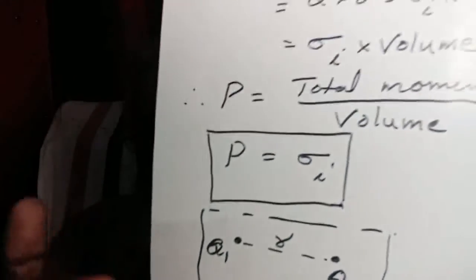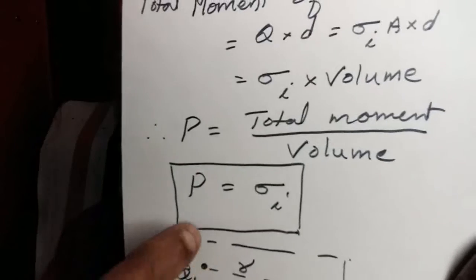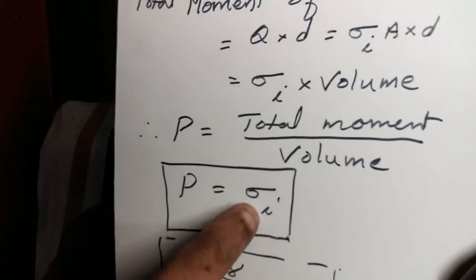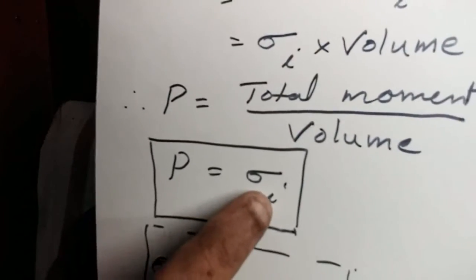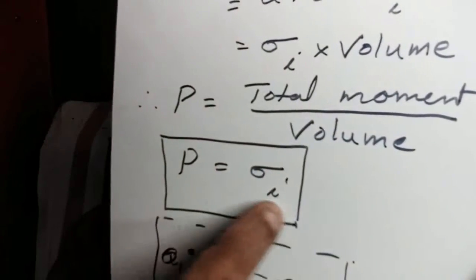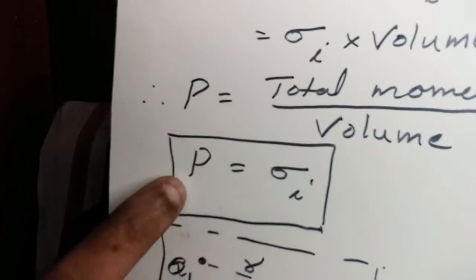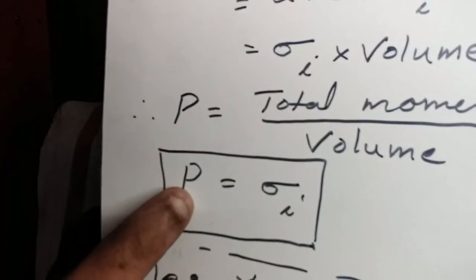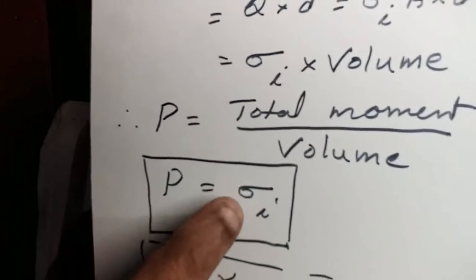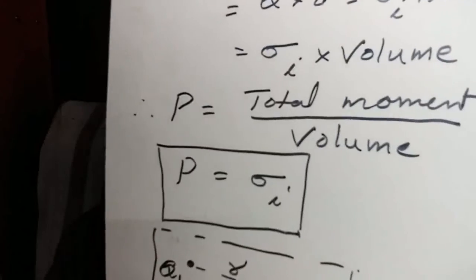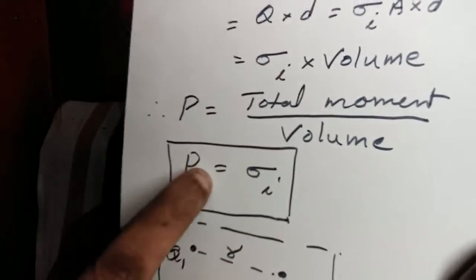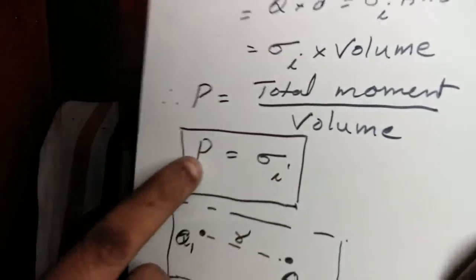Numerically, P is equal to the induced charge density or polarization charge density, so the unit of P is coulomb per meter square, the same as that of surface density of charge.